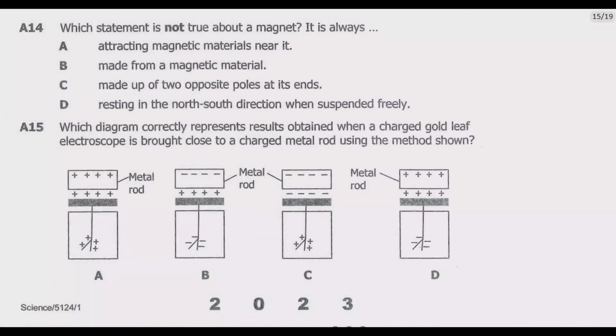Question A14: Which statement is not true about a magnet? It is always A, attracting magnetic materials near it. This is true. A magnet will always attract magnetic materials that are near it. This is due to the magnetic field generated by the magnet. When a magnetic material enters this field, it experiences a force that pulls towards the magnet. Hence A is true.